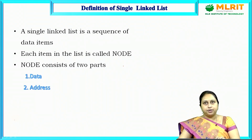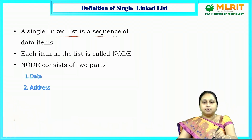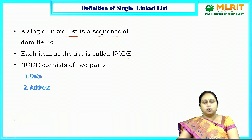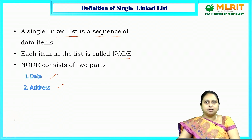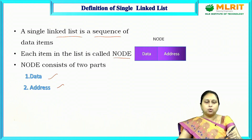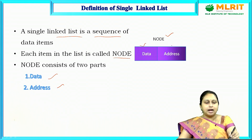A single linked list is a sequence of data items where each item in the list is called a node. A node consists of two parts: one is data and the other is the address. Here this is the node structure where you have two parts — data and address.